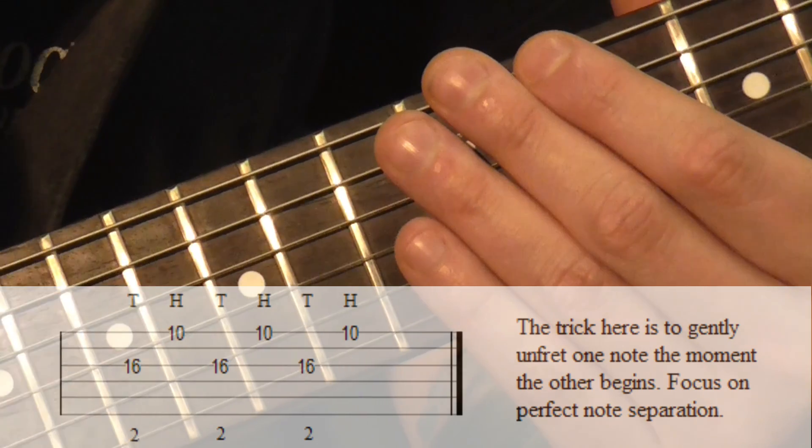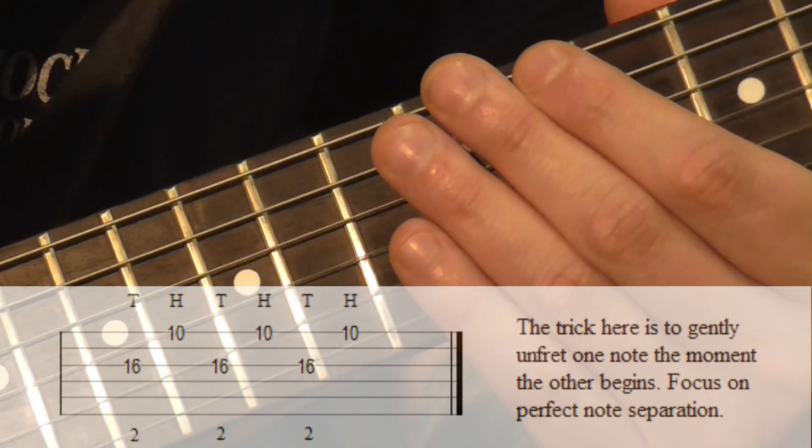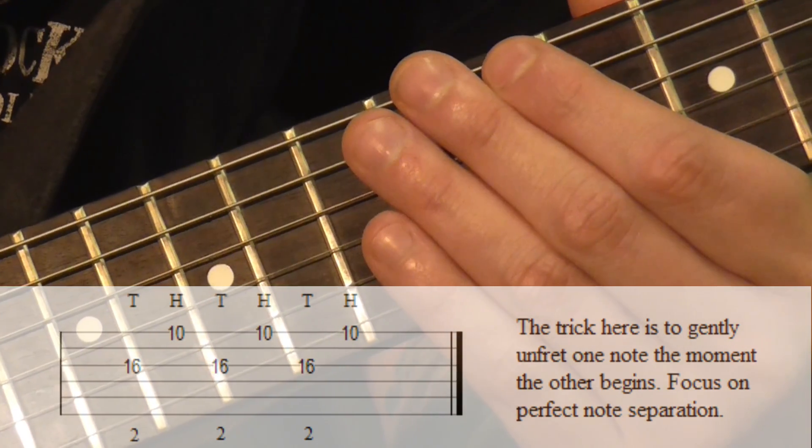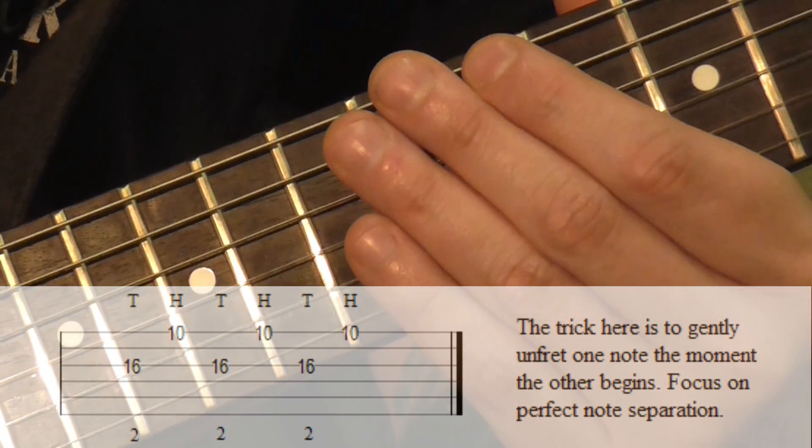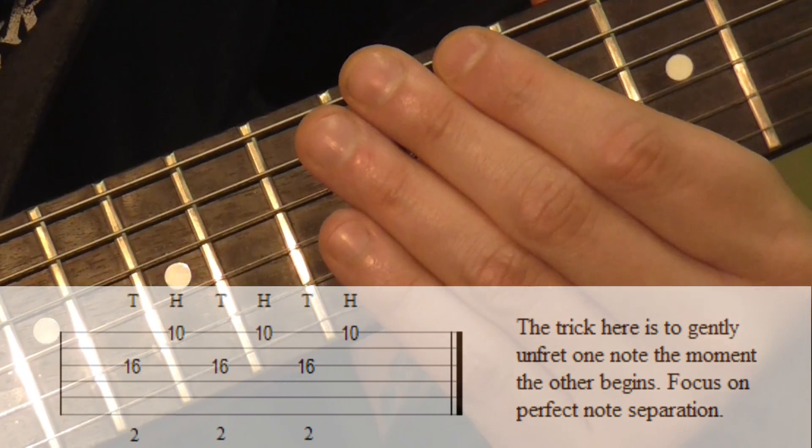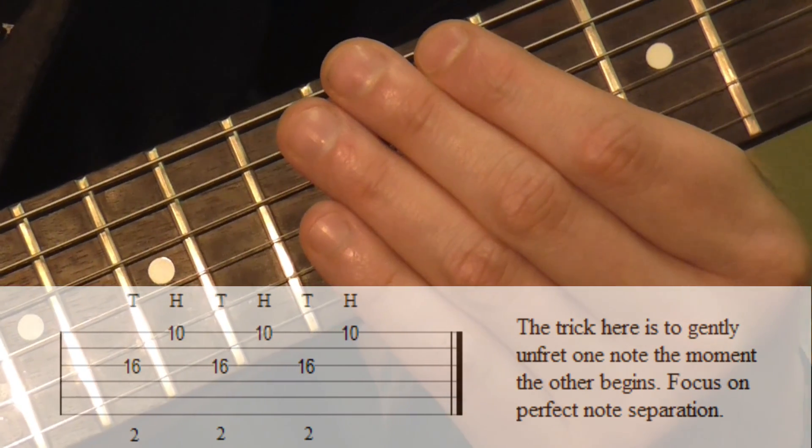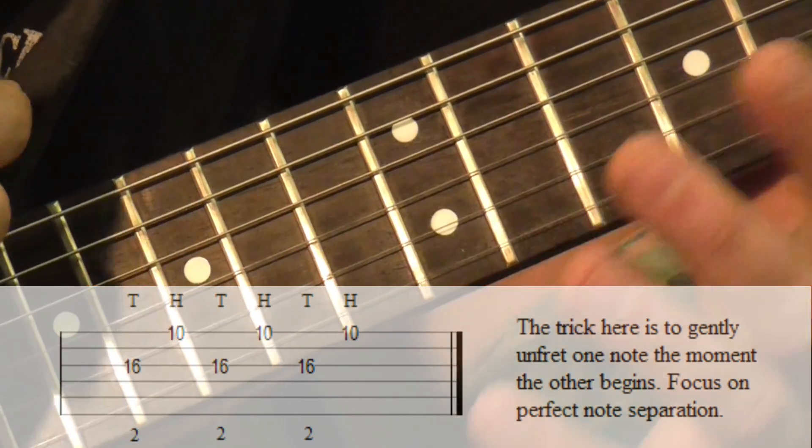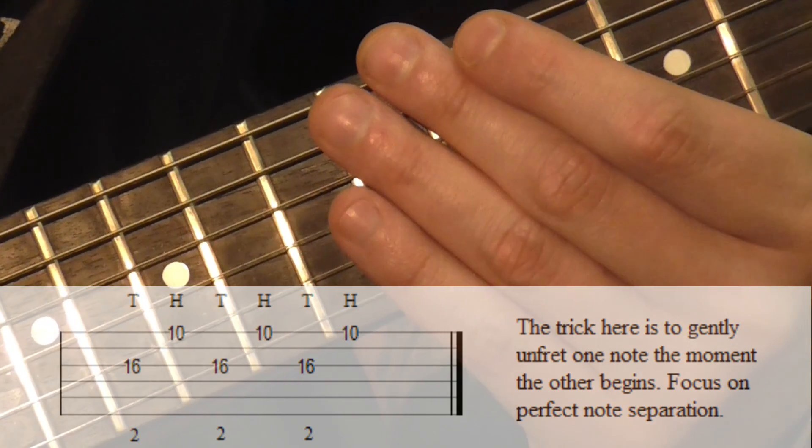You just want to do this back and forth, making sure that you can cross strings with the tapping technique easily and cleanly. Make sure those note transitions are absolutely perfect. Don't go too quickly with this one because you wouldn't normally encounter this kind of maneuver over and over again in playing.